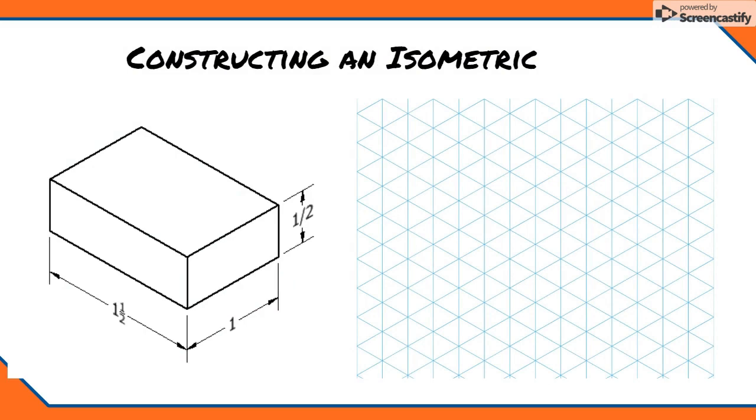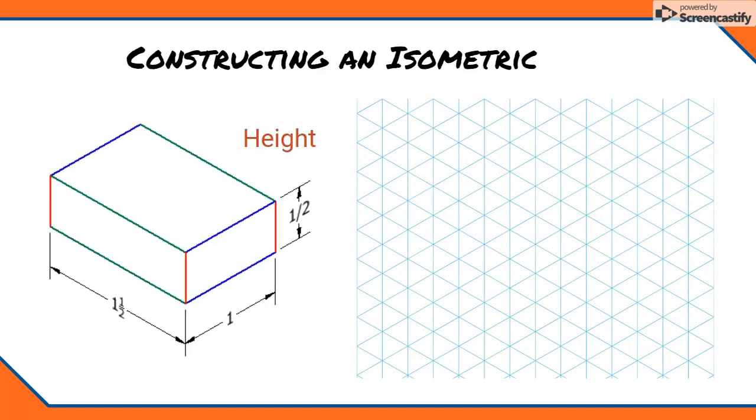Let's break down a simple isometric. All objects have three dimensions: width, height, and depth. In this example, width lines will be represented in green, height lines will be represented in red, and depth lines will be represented in blue.